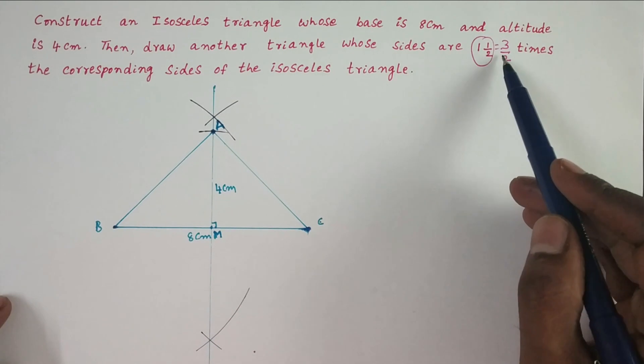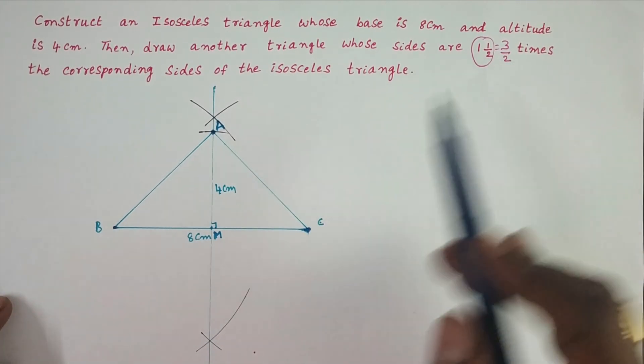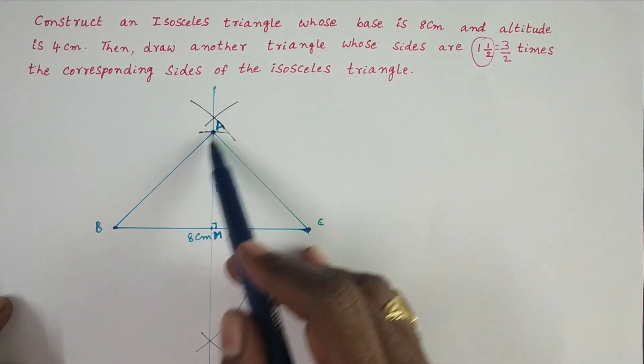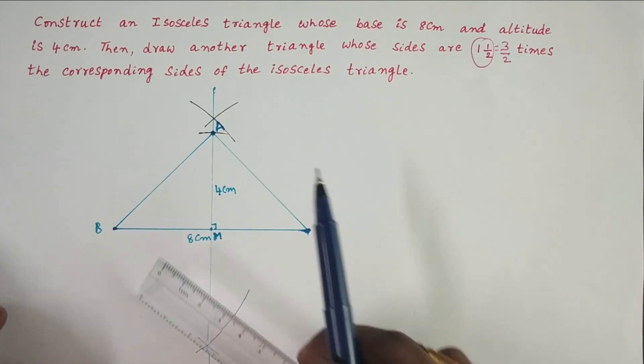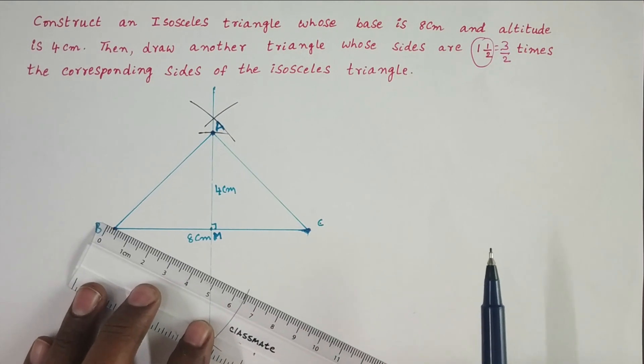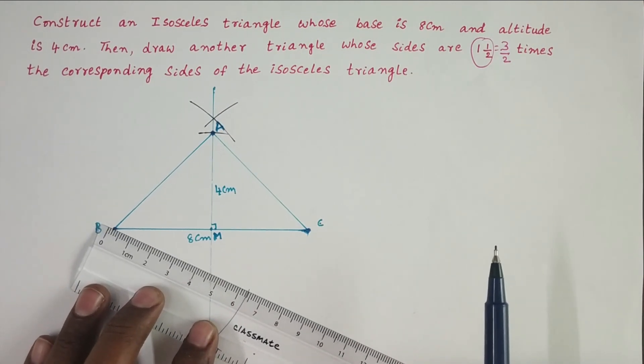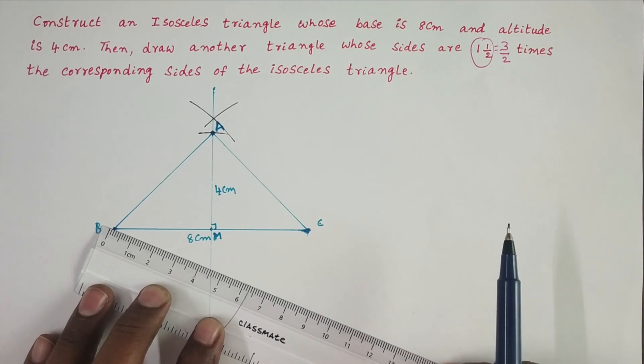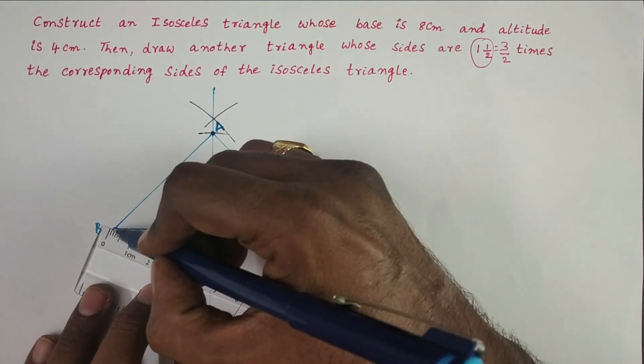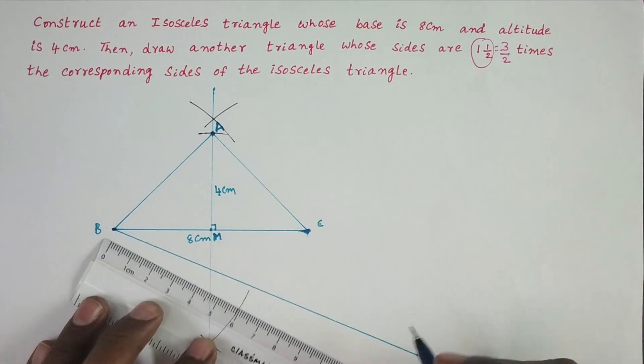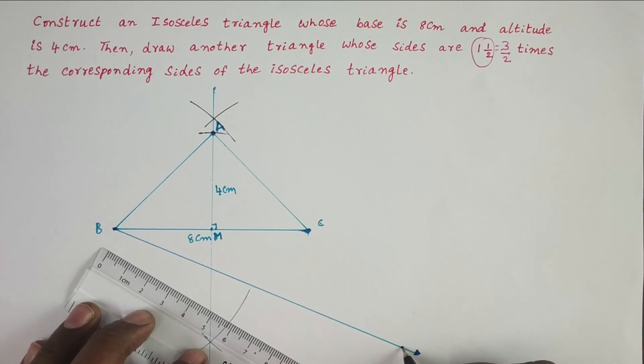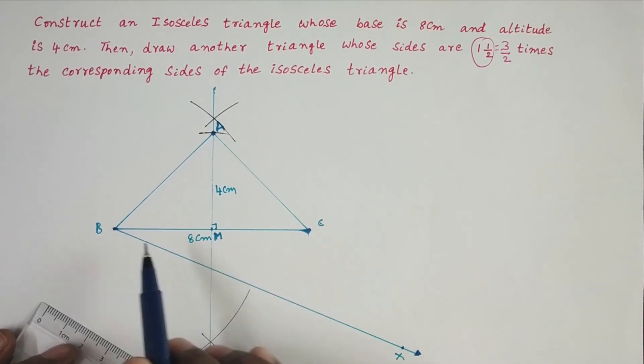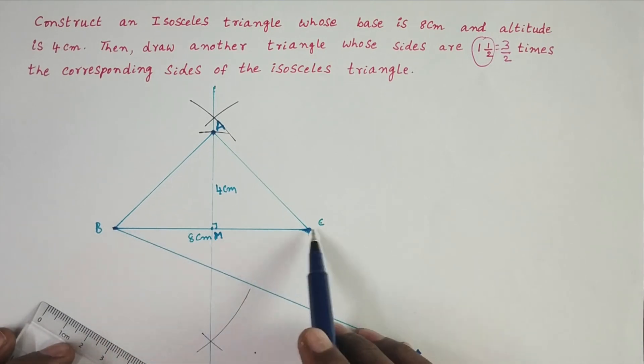It has two parts. We will construct a similar triangle of ABC with three parts. Draw a ray BX that makes an acute angle with BC. Draw ray BX making an acute angle with side BC.